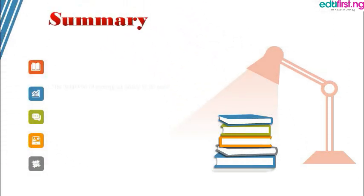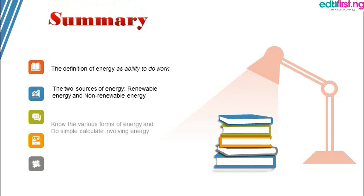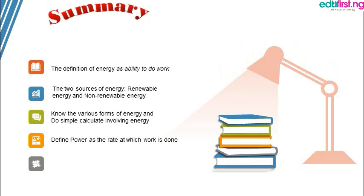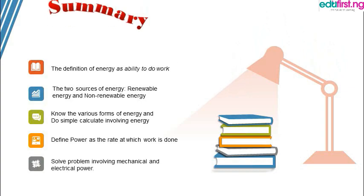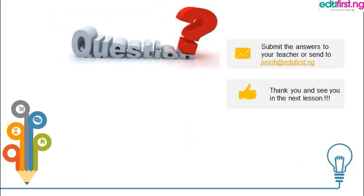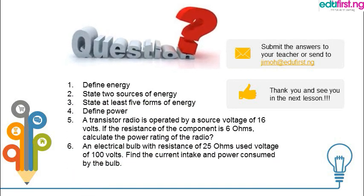I hope you've learned how to define energy as the ability to do work. You should also remember that there are two sources of energy: renewable and non-renewable. We've learned the various forms of energy and carried out simple calculations involving energy and power. Power is the rate at which work is done, and we've covered solving both mechanical and electrical power problems. Please go through those questions as revision and send your answers to the email. Thank you for being in this class — I hope to see you again.